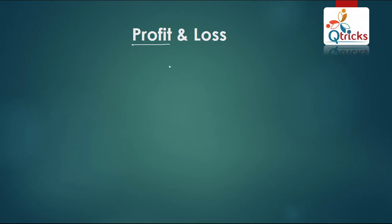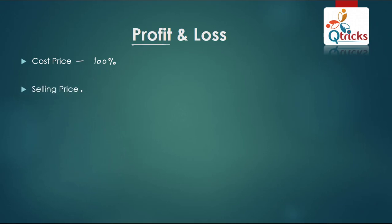We will start with the basic points of profit and loss. The first point is cost price. What is cost price? It is the price at which you purchase an item. The cost price is always equal to 100%. Next is selling price — that is the price at which you sell or buy an article.